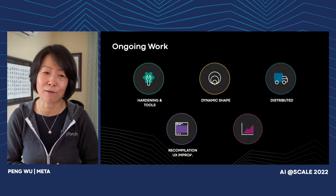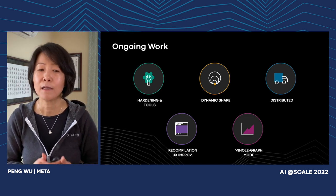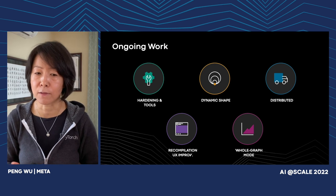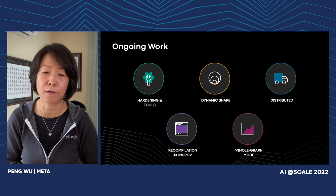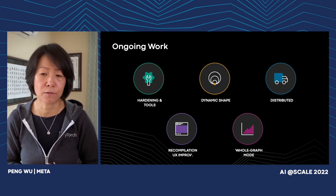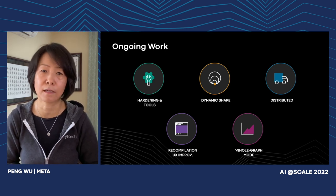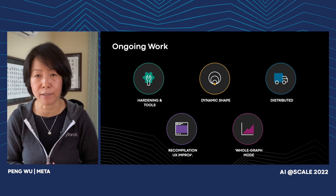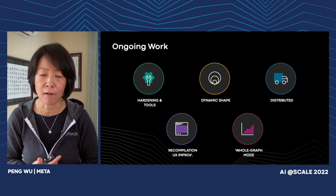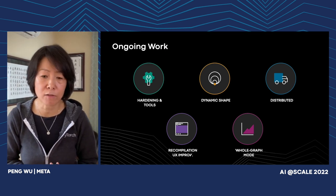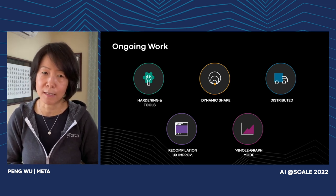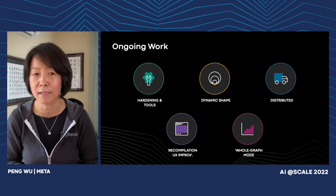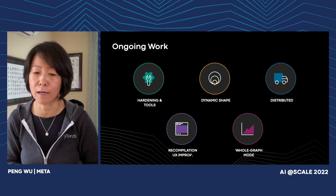Before the official release of Dynamo, there is still a lot of work to be done. We are working hard on hardening the technology and developing tools. We are looking into capturing graphs and compiling with dynamic shapes, which is really critical for production models. We are making sure Dynamo works smoothly with existing distributed APIs for composability. We are also looking at recompilation metrics such as cold start time and warm start time. Finally, we are exploring whole graph capture, because even though Dynamo is designed for partial graph capture, larger graphs mean better optimization scope, and for export paths, whole graph capture is essential.